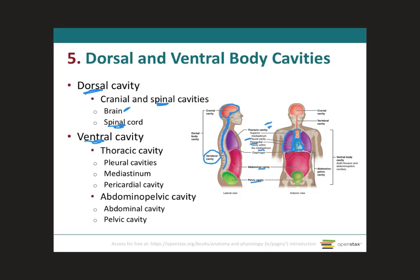Just inferior to the thoracic cavity, we have the abdominal cavity and the pelvic cavity. Collectively they can be called the abdominopelvic cavity. The abdominal cavity houses most of the digestive system organs, while the pelvic cavity houses part of the descending colon, the urinary bladder, and the rectum. In females, it also houses the uterus, fallopian tubes, and ovaries.